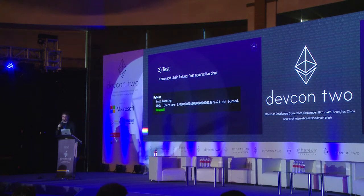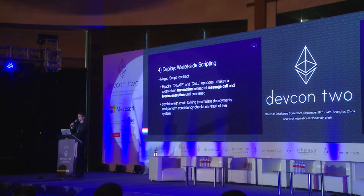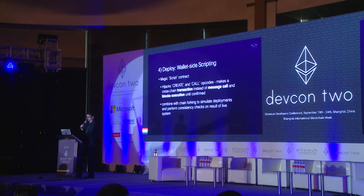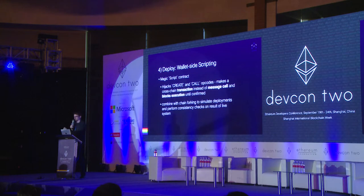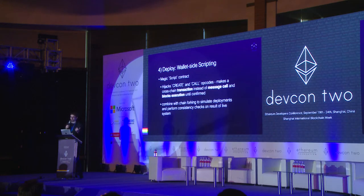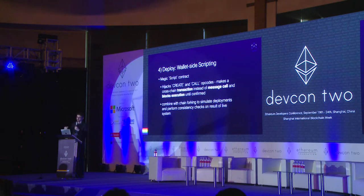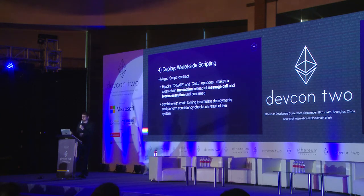Testing is kind of interesting, but it gets really interesting when we want to deploy contracts, which is one of the applications of what we call wallet-side scripting. This is another magic EVM contract, but its harness has hijacked the create and call opcodes — what usually creates a message call internal to one transaction, instead we actually create a full transaction and block the wallet-side EVM execution until it gets confirmed. You combine this with the chain forking feature, and you can simulate live deployments before you actually do them, do dry runs, and then run consistency checks on the result of your system to make sure the update you want to do doesn't screw anything up.